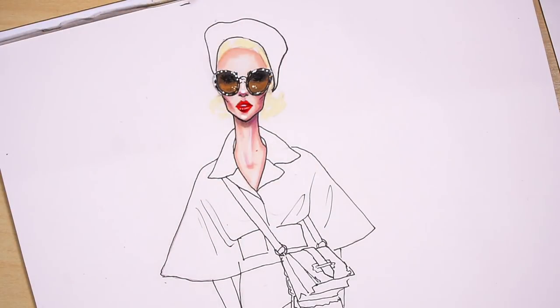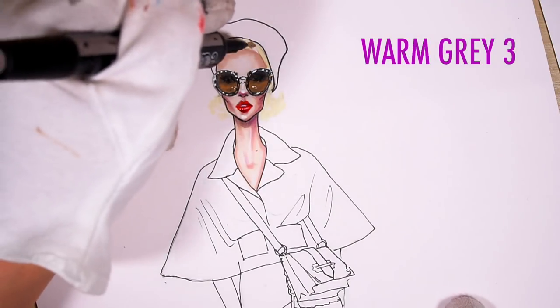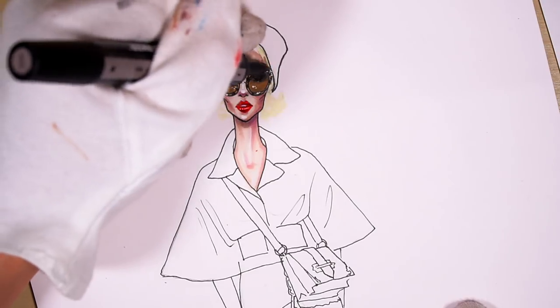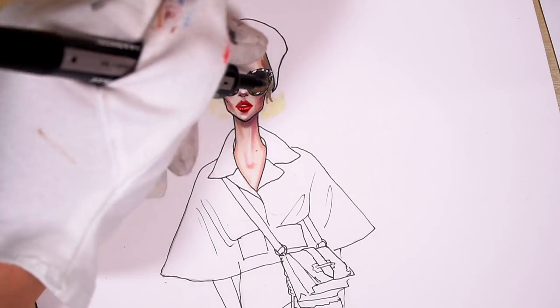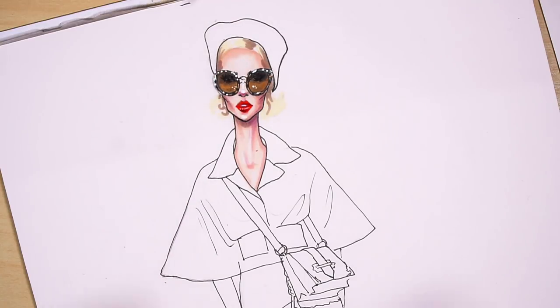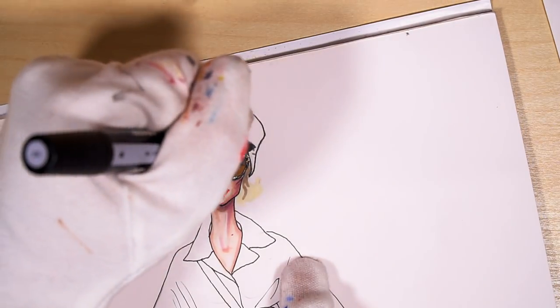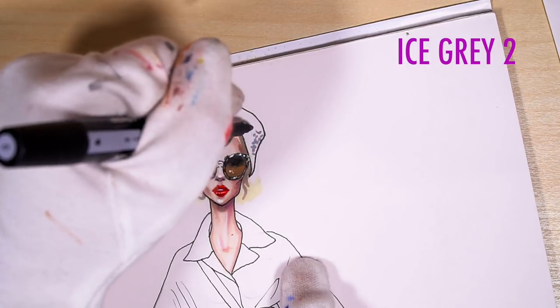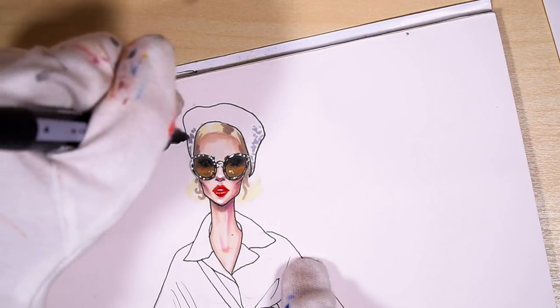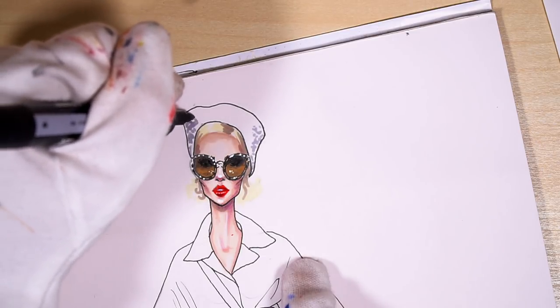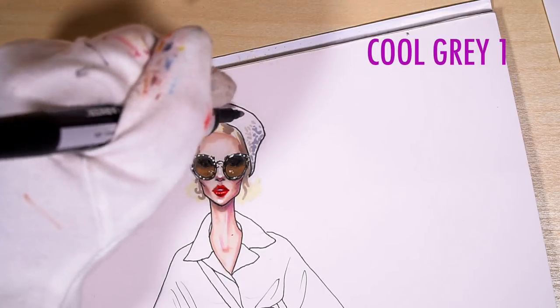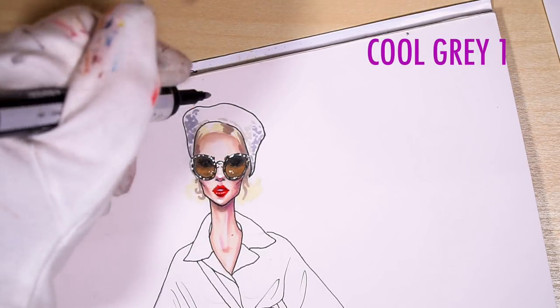Next warm gray 3, adding shadows on her hair, mostly on the sides and where she has the parting of her hair. With ice gray 2, I'm drawing just lines, like horizontal, vertical lines, or like corner shapes on the sides of her cap. Next with cool gray 1, I'm doing the same, just drawing some lines along the lower hem and the upper one.